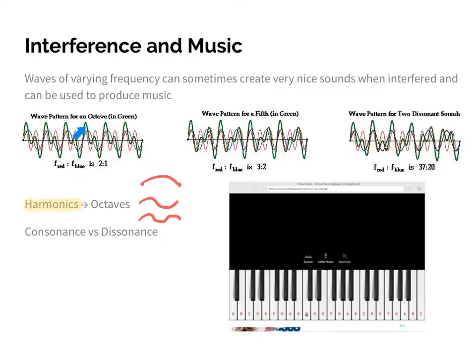The frequencies of harmonics or octaves are always whole number integers of the fundamental frequency. For example, if the first harmonic is 40 hertz, the next would be 80, then 120, and so on.